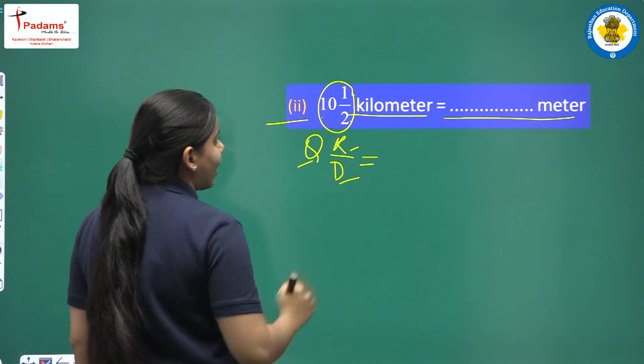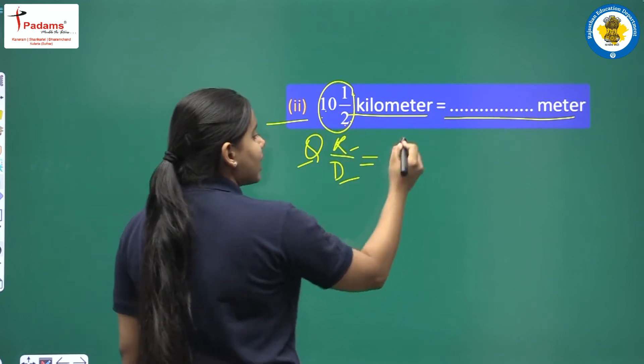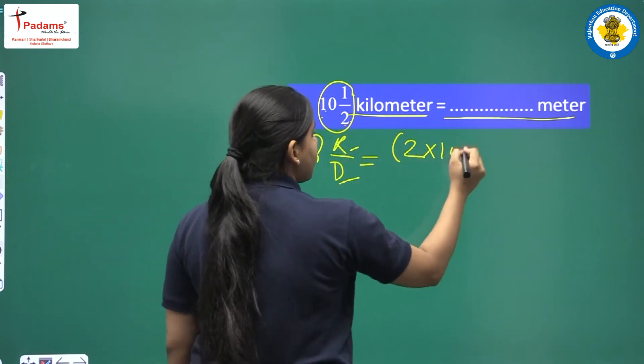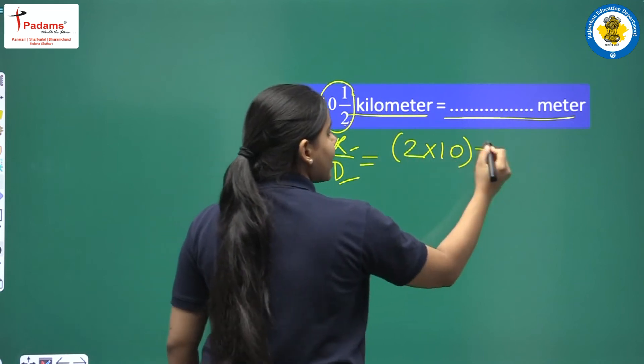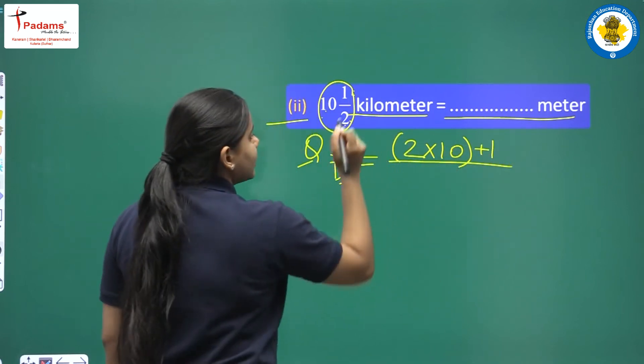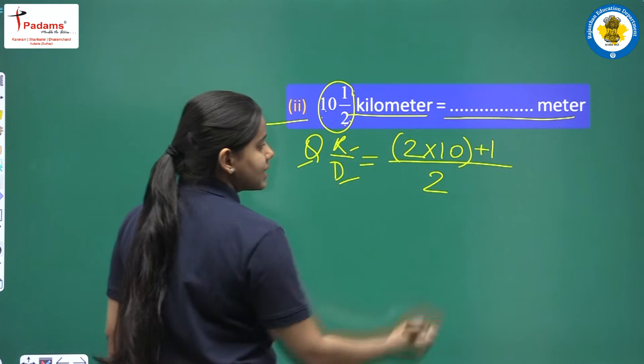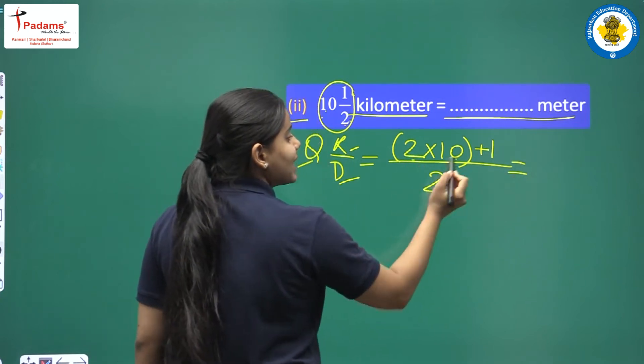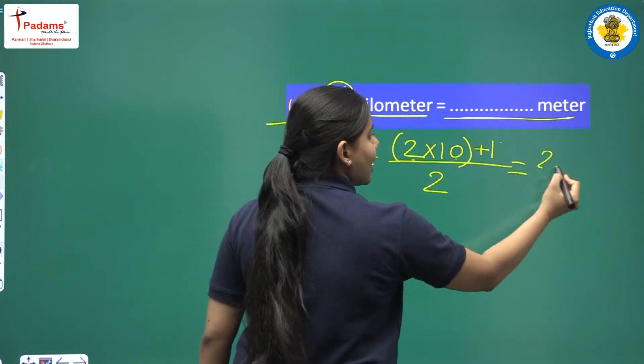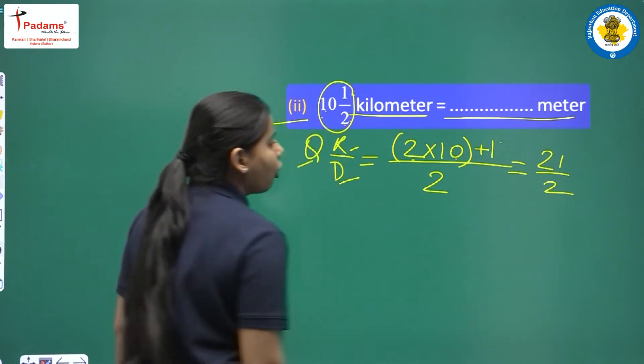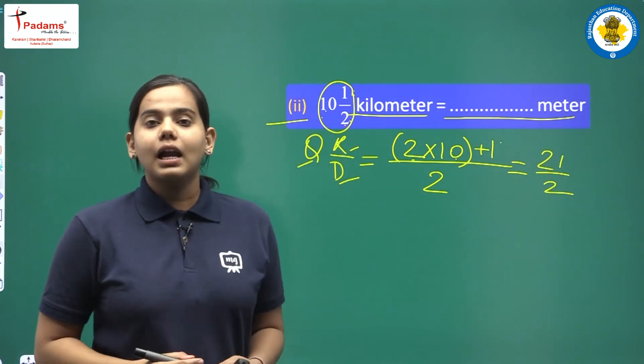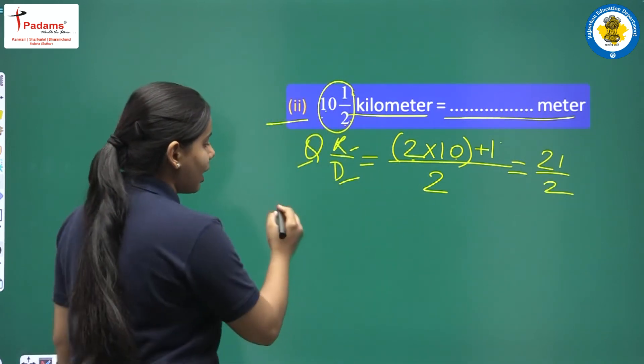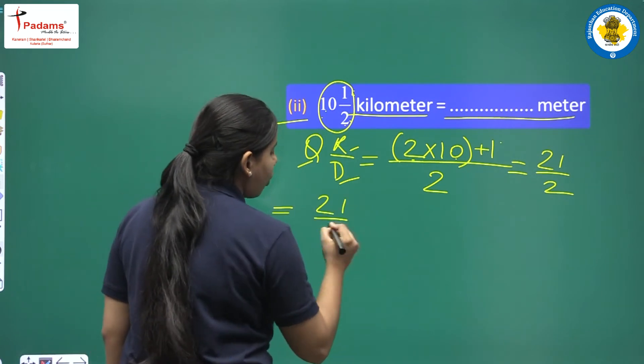We multiply 2 by 10 and then the answer will be plus 1. Then denominator will remain same. So children, you know 2 tens is 20, 20 plus 1 is 21 and upon we have 2. So this is our answer of improper fraction. We get 21 upon 2.